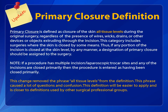The definition of primary closure of an incision has been simplified. The new definition states that a primary closure is defined as closure of the skin during the original surgery, regardless of the presence of wires, wicks, drains, or other devices extruding through the incision. If any portion of the incision is closed at the skin level by any manner, a designation of primary closure should be assigned. This change removed the phrase 'all tissue levels' from the definition, which had caused confusion, making it closer to definitions used by other surgical professional groups.